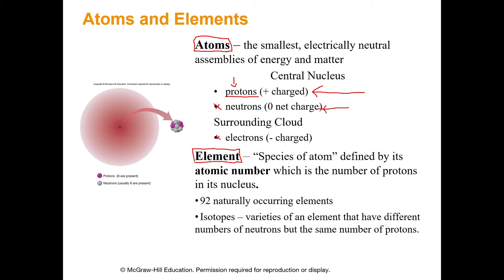You can change the number of neutrons in an atom, you can change the number of electrons floating around it, and you'll have the same element but a slightly different atom — that gets into isotopes. There are 92 naturally occurring elements. You'll watch sci-fi movies where they say 'we've discovered a new element, unobtainium' — but you can't find an element between hydrogen and helium because you can't have a proton and a half. The number of protons defines what the element is.